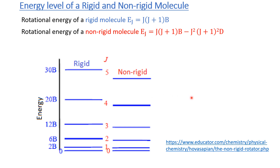This concludes the discussion of rotational energy levels for the diatomic molecule. Next we will discuss the rotational energy levels of polyatomic molecules, followed by the vibrational spectra of molecules. You can also follow the provided link for additional reading on molecular spectra. The next lecture will cover the rotational energy levels of polyatomic molecules.